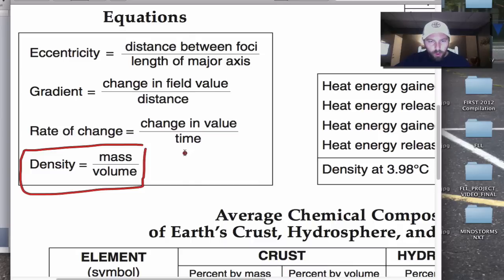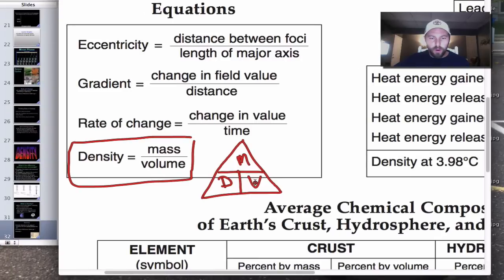Sometimes, what some students have learned earlier is this nice little triangle. So we have this, looks like that. And then we have density, mass, and volume. Density equals mass over volume. We'll come back to this triangle again.